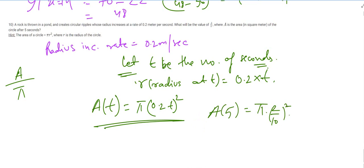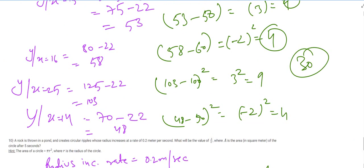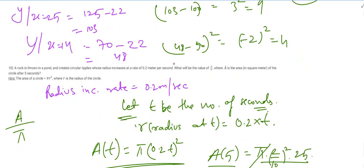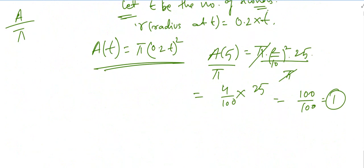Since we want A over pi, dividing by pi cancels it out. We get (4 over 100) times 25, which equals 100 over 100, equals 1. So the answer is 1. Thanks a lot and happy learning!